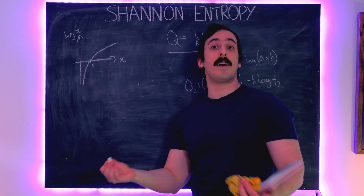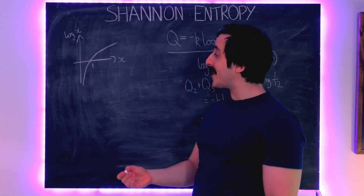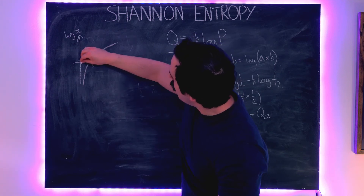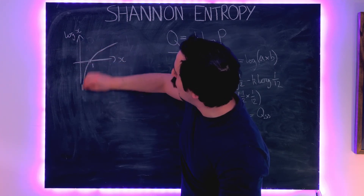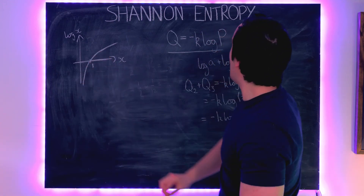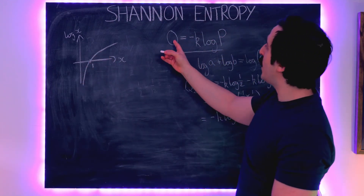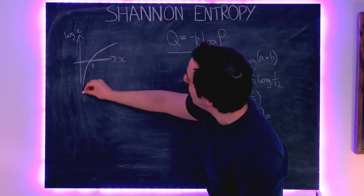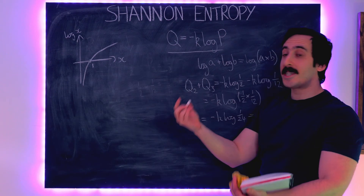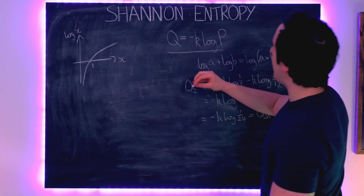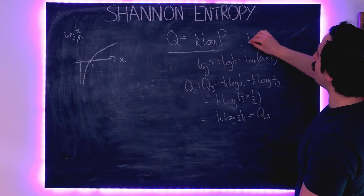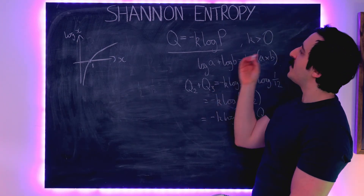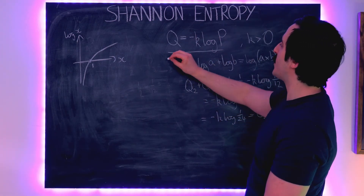Probability is always between zero and one, which means log of the probability is always negative. In order for Q to increase as probability falls — as probability falls, log P becomes more negative, but we want Q to become more positive — K must be a positive constant. That is how Shannon defined the information content Q.